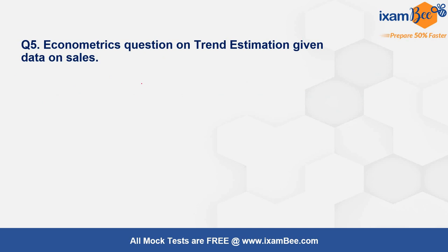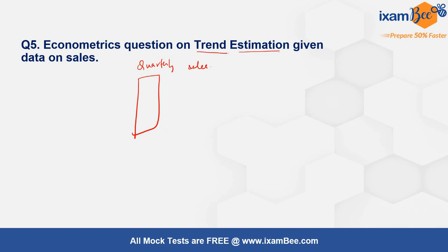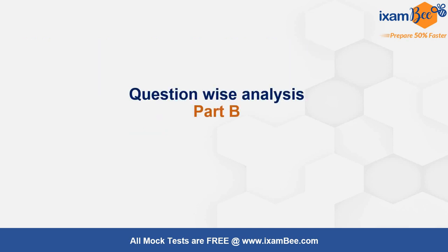The next question was from econometrics, where data on quarterly sales of a company was given. This was a question from the trend estimation topic, and several sub-questions followed based on that data.